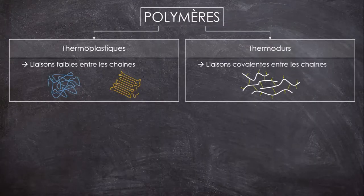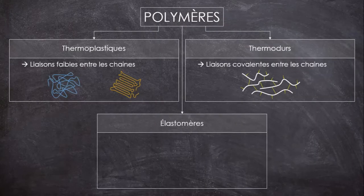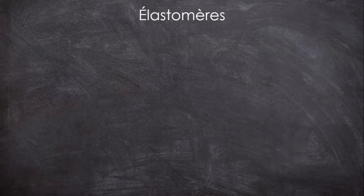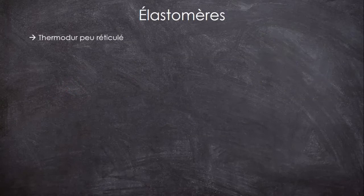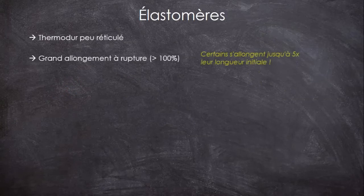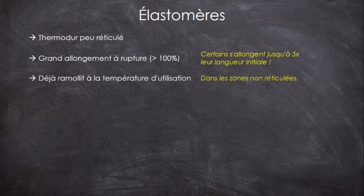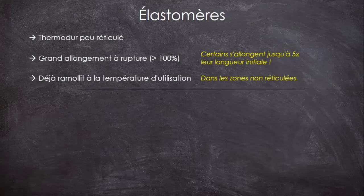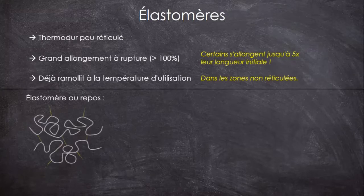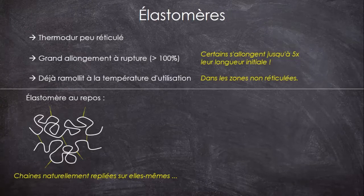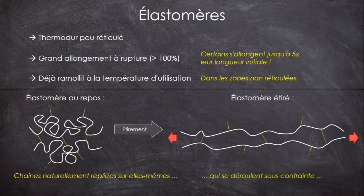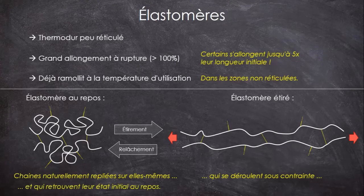En plus des deux grandes familles de polymères qu'on vient de voir, il existe aussi celle des élastomères, dont caoutchouc est un synonyme couramment employé. Un élastomère, c'est un thermodur peu réticulé, disposant d'un très grand allongement avant rupture, supérieur à 100%, et dont les zones non réticulées sont ramollies à la température ambiante. Ce qui explique leur élasticité importante, c'est qu'au repos les chaînes sont très repliées sur elles-mêmes. Lorsqu'on les étire, elles se déroulent de façon importante, ce qui s'observe à l'échelle macroscopique par un fort allongement du matériau. Et lorsqu'on les relâche, elles se réenroulent pour reprendre leur état initial.